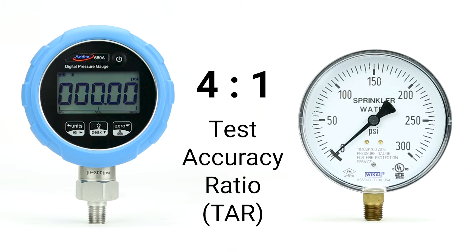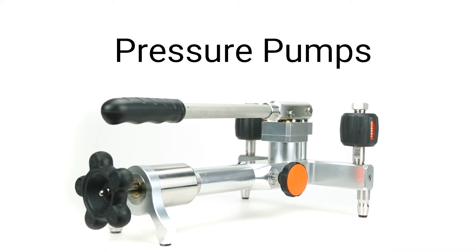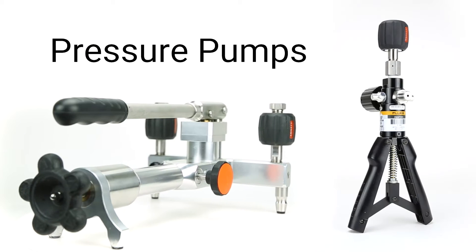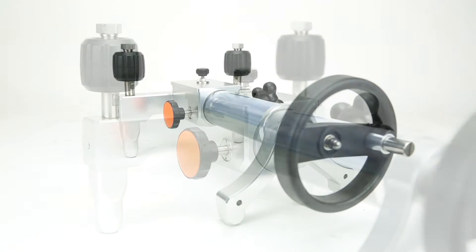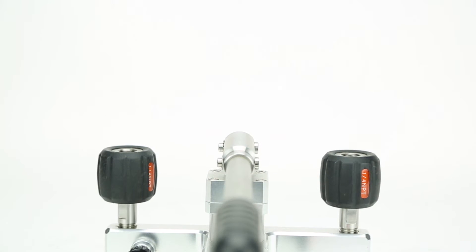Manual pressure pumps are one of the most common and budget-friendly ways to generate pressure. They are often operated using a lever arm, scissor grip, or wheel, and sometimes feature an isolation valve for pressure stability.